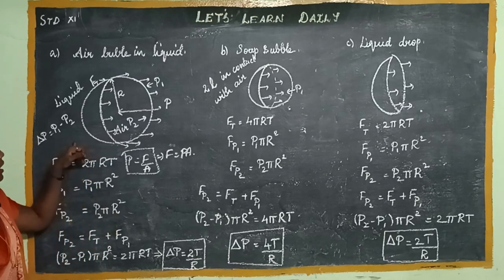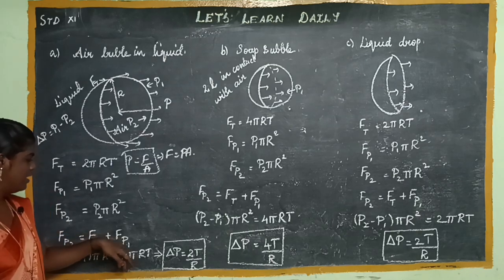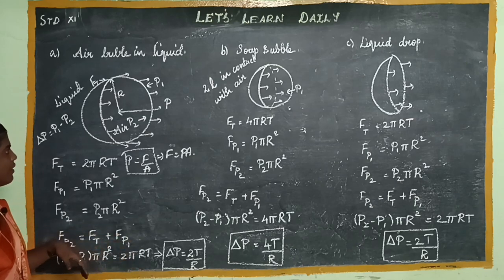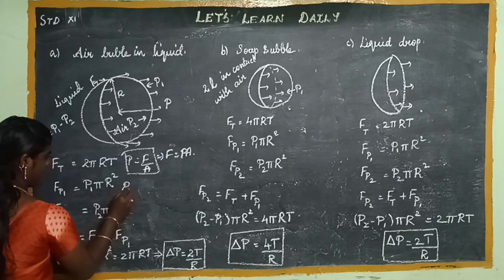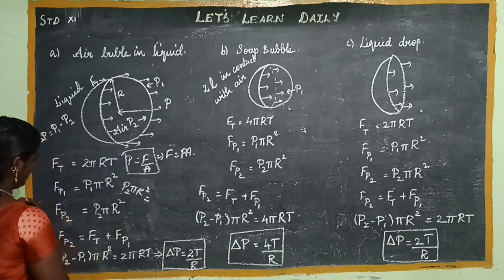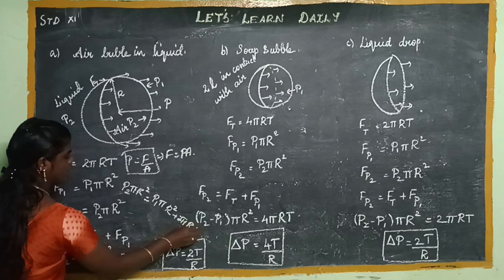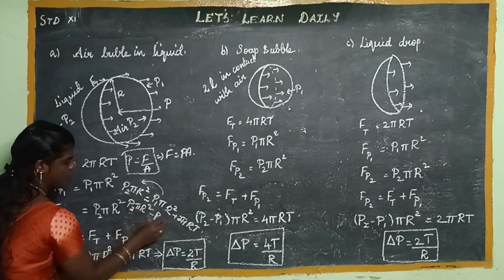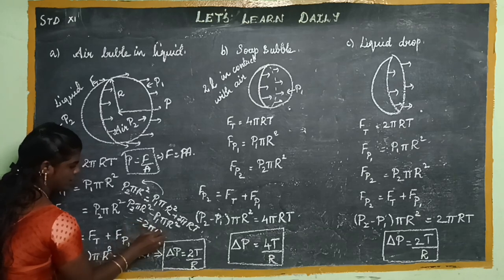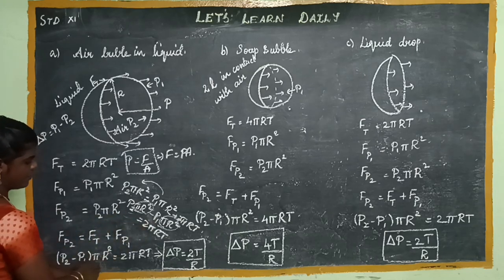In equilibrium, the forces balance: Fp2 equals Ft plus Fp1, meaning inside force equals surface tension force plus outside force. Substituting values: P2·πR² = P1·πR² + 2πRT. Rearranging: P2·πR² minus P1·πR² equals 2πRT, so (P2 - P1)·πR² = 2πRT.